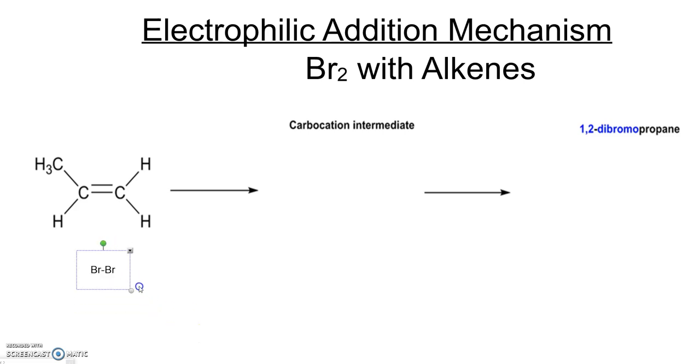So what happens here is that as the bromine molecule gets closer and closer to the alkene, the double bond induces a dipole in the bromine molecule and the bromine atom which is closest to the alkene is electron deficient.